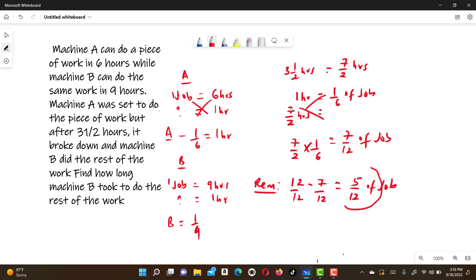So machine B was set to do this five over 12 of the job. So we are going to use the rate of machine B. If machine B can do one hour, it can cover one over nine of the job. Then how long can machine B take to do five over 12 of the job?